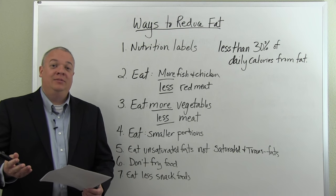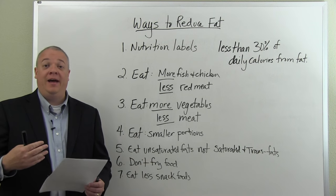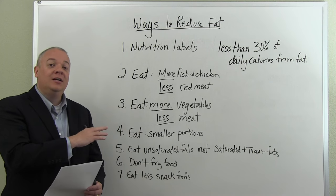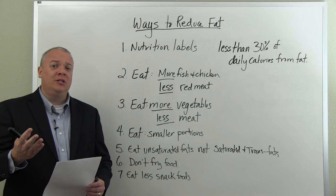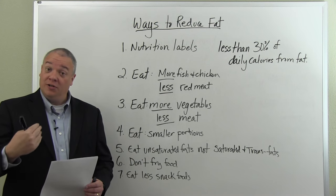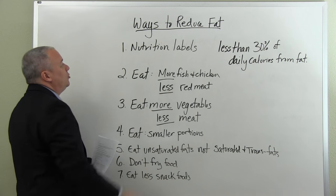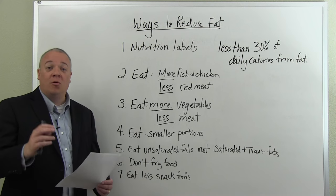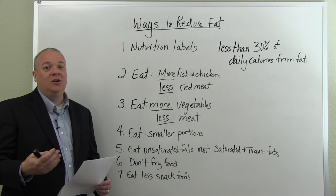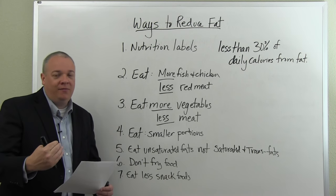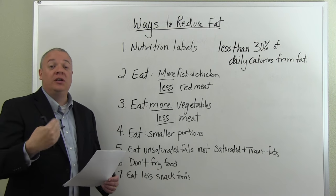Today we're going to talk about several methods to help people reduce the amount of fat eaten in their diet. I've got seven ways here — just a basic overview of things you can do for yourself or to help others. The first is the importance of nutritional labels. The government requires nutritional labels on food to indicate the amount of fat in a product, so in educating someone you need to teach them how to read a nutritional label and always look at it before buying and consuming the product.